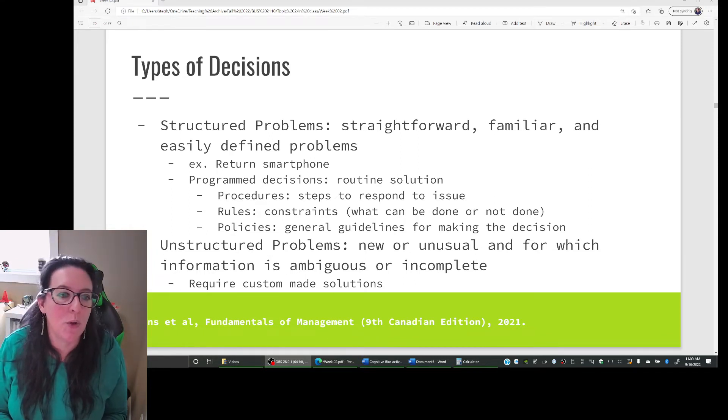When you go to solve a problem, it can be a structured problem. It is straightforward, familiar, and easily defined. And so we have a mechanism in place for solving it. For example, let's suppose you are Best Buy and you are dealing with the return of a smartphone. This is a programmed decision, so we have a routine solution to it.